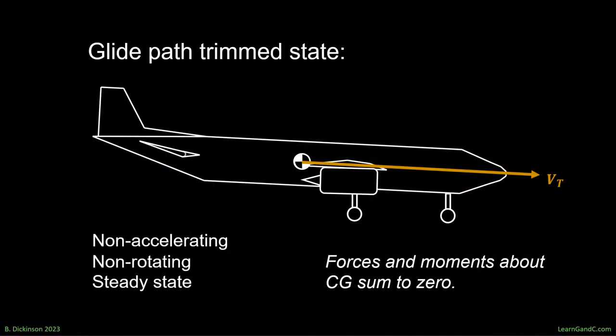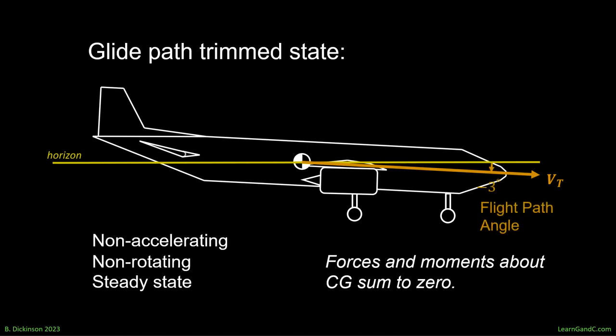During the glide path, the aircraft is still trimmed in the sense that it's non-rotating, non-accelerating, and in steady state. The configuration is often pitched down with reduced throttle. Again, the forces and moments about the CG sum to zero, but this time with negative flight path angle.